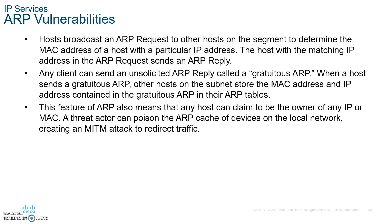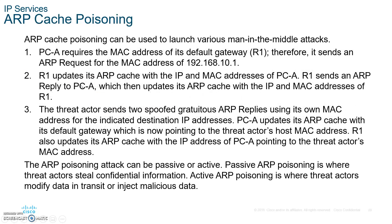You also send the victim an ARP reply telling them that their gateway IP address is you. So the victim sends data to you when it needs to reach the gateway, you forward it to the gateway, the gateway sends it to you, and you forward it to the victim — you're the man in the middle via ARP poisoning, capturing all the data unless it's encrypted.